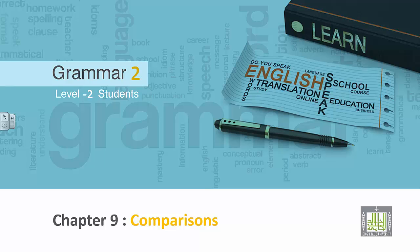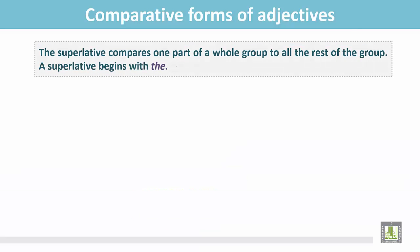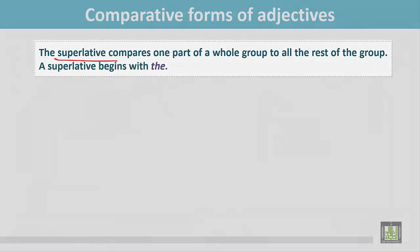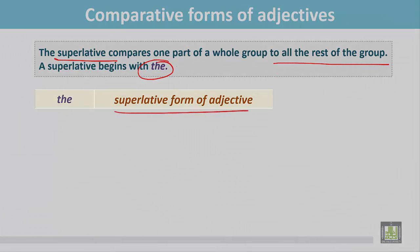Grammar 2 for Level 2 students, Chapter 9: Comparisons — Comparative forms of adjectives. The superlative compares one part of a whole group to all the rest of the group. A superlative begins with 'the.' The superlative form of an adjective is followed by 'the.'